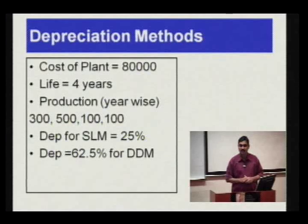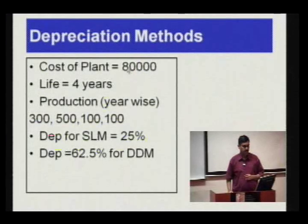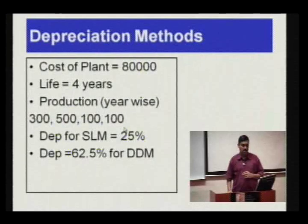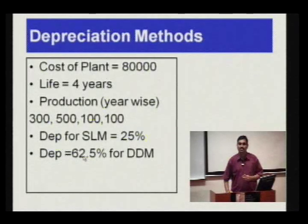For example, continuing with the same example from the last session: the cost of the plant is 80,000, the life is 4 years, and the production per year is 300 units, 500 units, 100 units, and 100 units. Using depreciation for SLM at 25% and for the diminishing balance method at 62.5%.